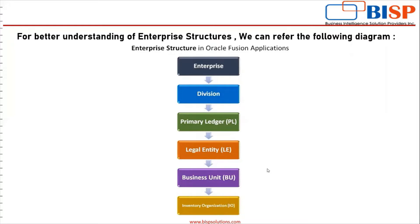For better understanding of enterprise structure, we can refer to the following diagram. First is enterprise. Enterprise is a top-level entity, and only one enterprise can be created in an Oracle Fusion instance.